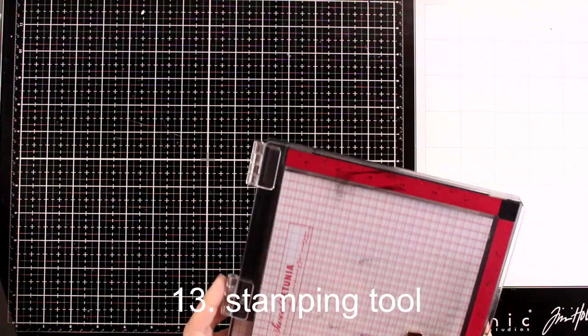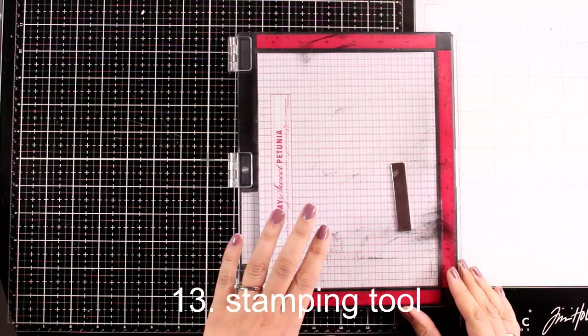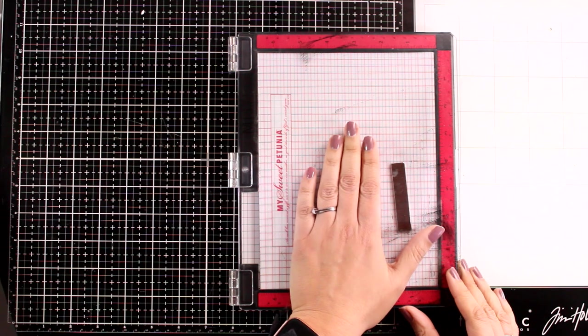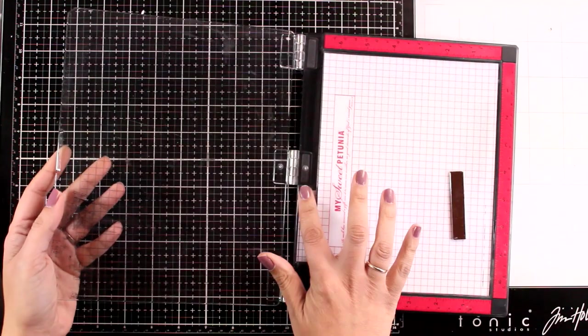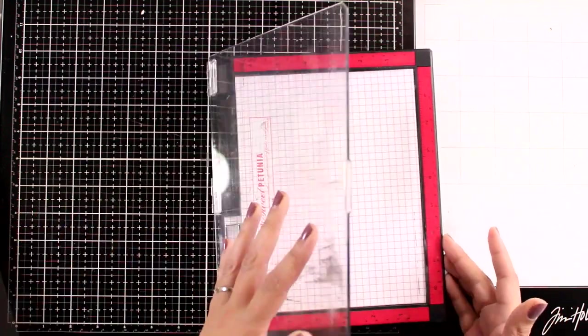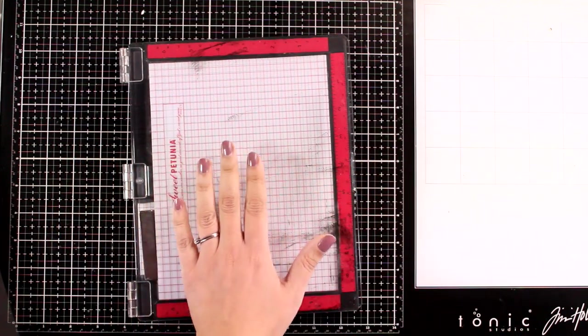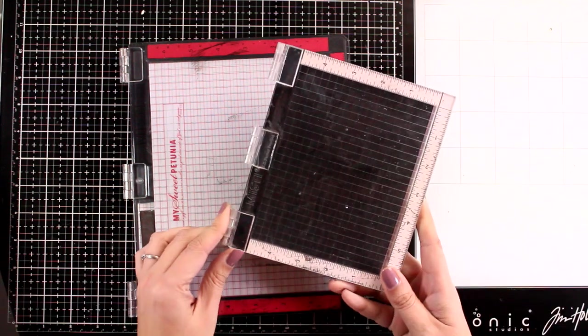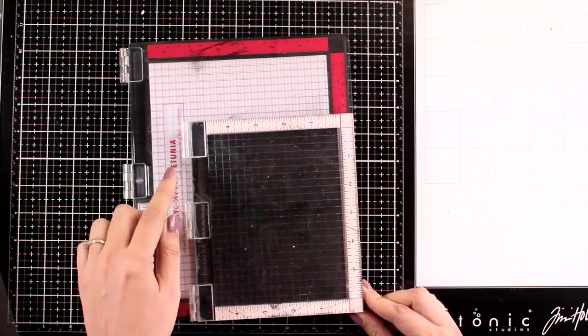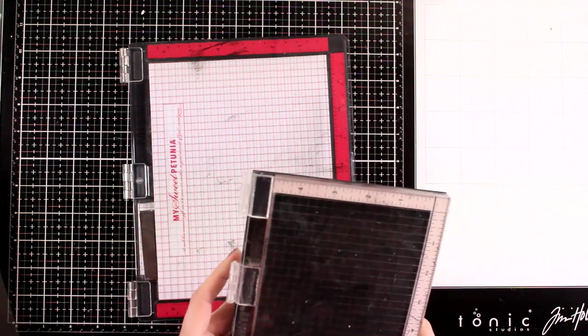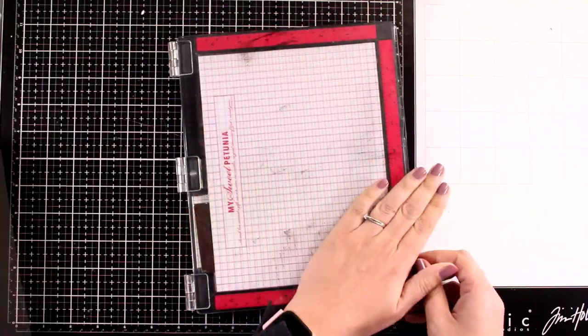Another good thing to grab during sales is a stamping tool. I tend to grab my MISTI, and this is the second version. I know this is not cheap, it's quite expensive, but it's a tool you'll work with on pretty much every project. When you start stamping with this one, you'll never look back. You'll find multiple links to online shops down below for all the products I'm showing you today.